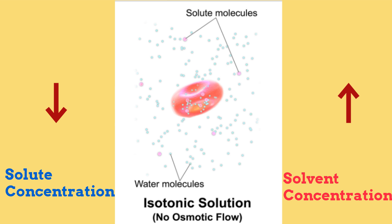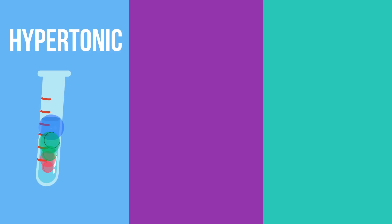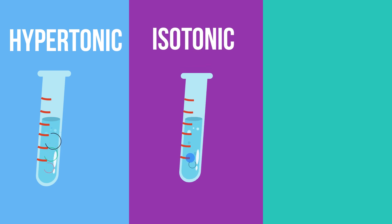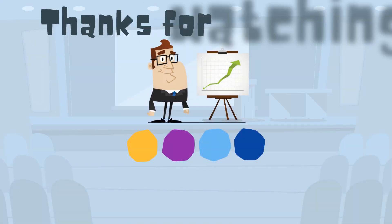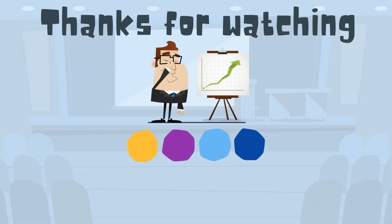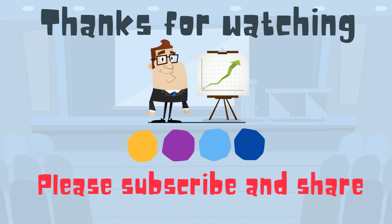So, there we go — three types of solutions: hypertonic, isotonic, and hypotonic. I hope this helps, and thanks for watching. Moo Moo Math uploads a new math and science video every day. Please subscribe and share.